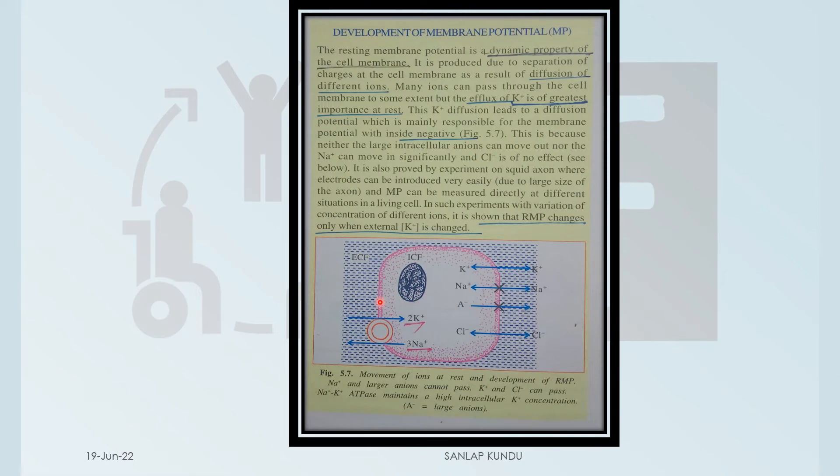Now in this figure you can see three sodium ions are expelled and two potassium ions are brought into the cell. So three sodium ions are ejected for two potassium, so option B and option C are also correct.